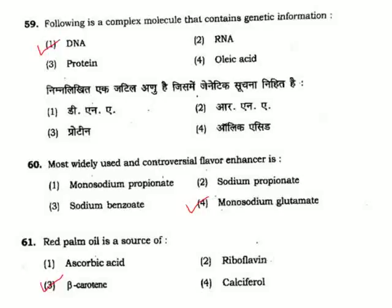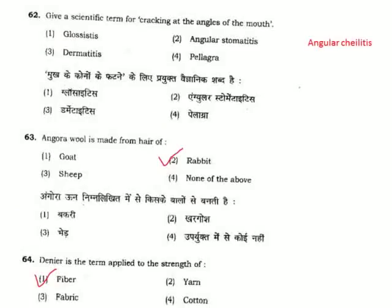Question 60: Most widely used and controversial flavor enhancer is — basically found in Chinese foods, this is monosodium glutamate. Option 4. Question 61: Red palm oil is a source of — red palm oil is a source of beta-carotene. Correct answer is Option 3.